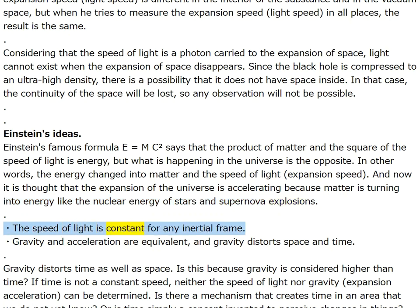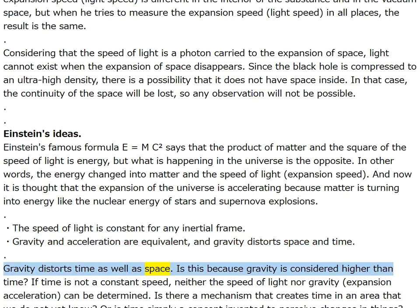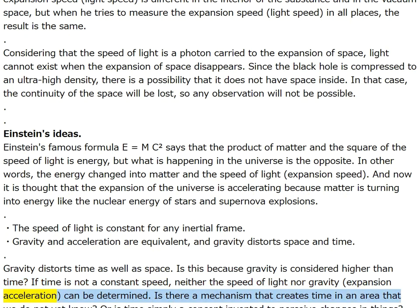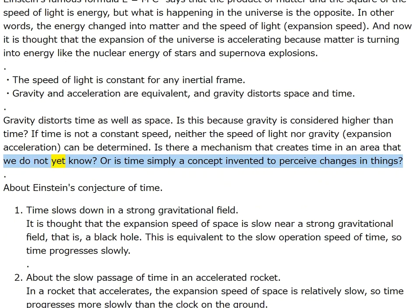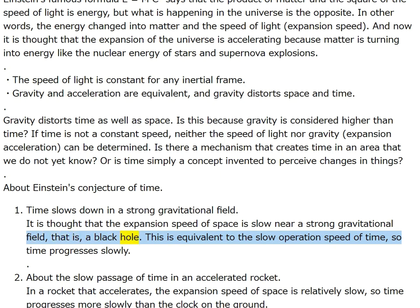The speed of light is constant for any inertial frame. Gravity and acceleration are equivalent, and gravity distorts space and time. Is this because gravity is considered higher than time? If time is not a constant speed, neither the speed of light nor gravity expansion acceleration can be determined. About Einstein's conjecture of time: time slows down in a strong gravitational field — it is thought that the expansion speed of space is slow near a strong gravitational field, equivalent to the slow operation speed of time.